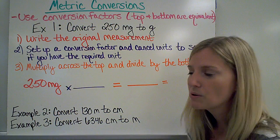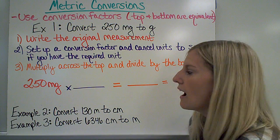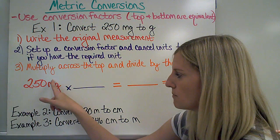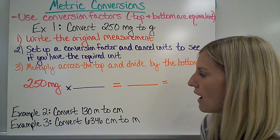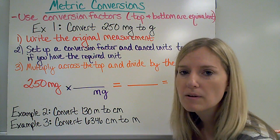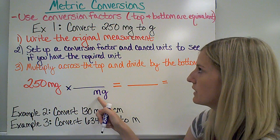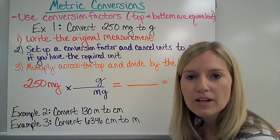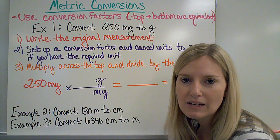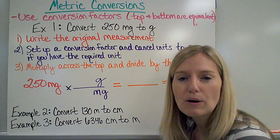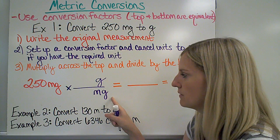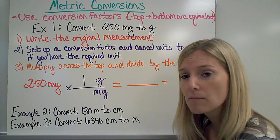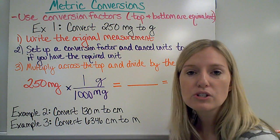I've first written my original measurement. For my conversion factor, I need to write the unit I want to get rid of on the bottom. If I have the same unit on the top and the bottom, they cancel. So I put milligrams on the bottom of that conversion factor. Because I'm going from milligrams to grams, the unit of grams will be on top. I have to think about what numbers go in front of these units and how to make them equal. A gram is larger, so in one gram I will have 1,000 milligrams — I know that from the chart on the previous slide.